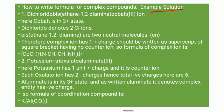The first example is dichlorido bis(ethane-1,2-diamine)cobalt(III) ion. Here cobalt is in the 3+ state. Dichlorido denotes 2 Cl⁻ ions within the bracket. Bis(ethane-1,2-diamine) represents 2 neutral molecules within the bracket. You can write it as 'en' also.